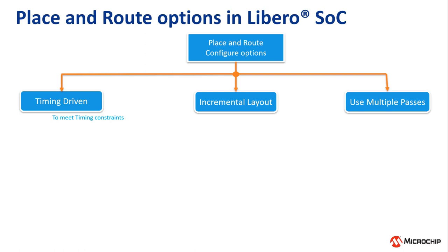Under the timing-driven option, there are four configuration options available. The first option is power-driven. This is used to reduce dynamic power while maintaining timing requirements. During power-driven place and route, the tool tries to reduce the routing network by tighter placement of logic.